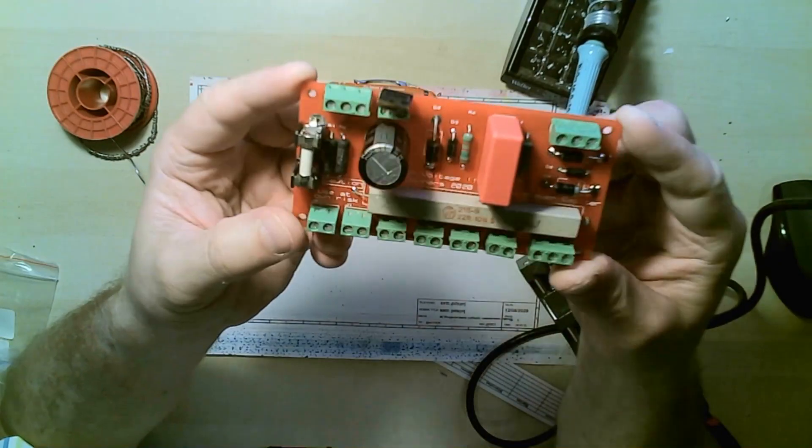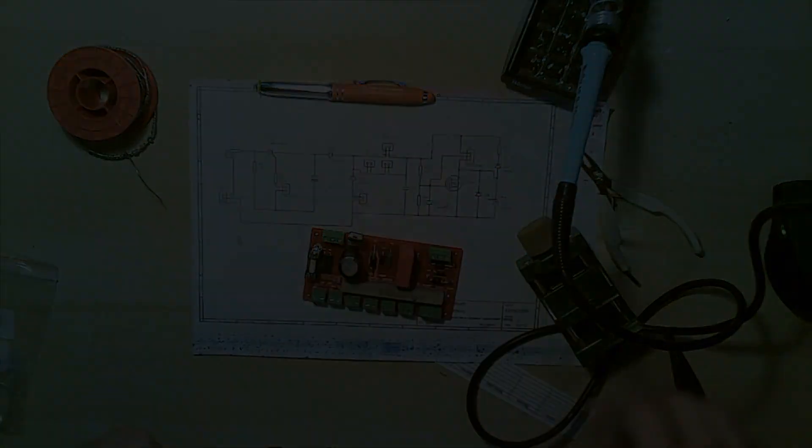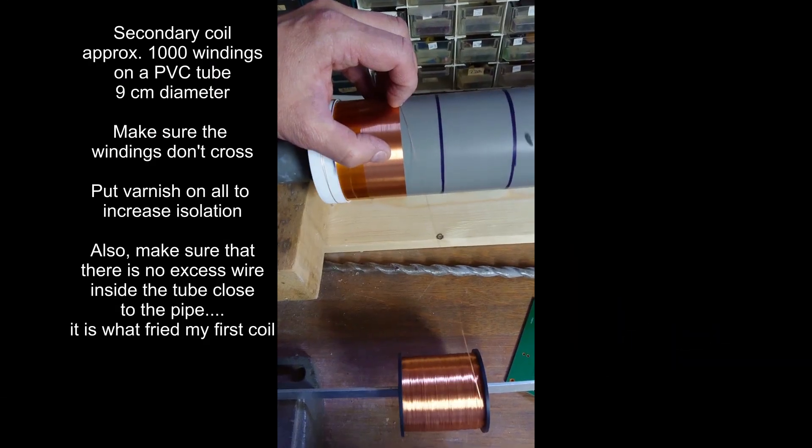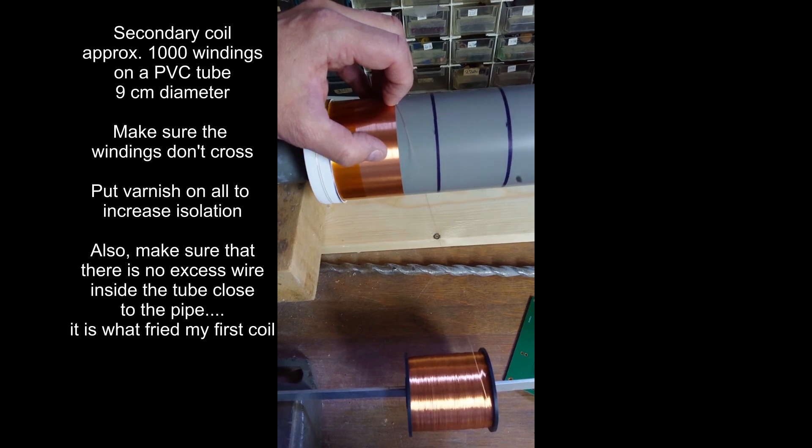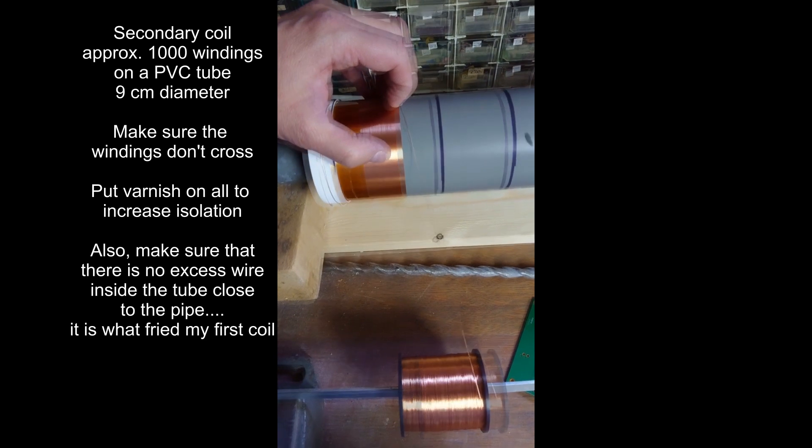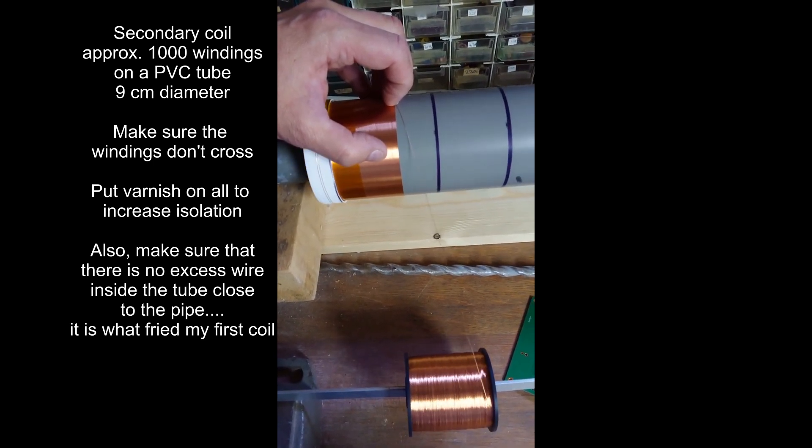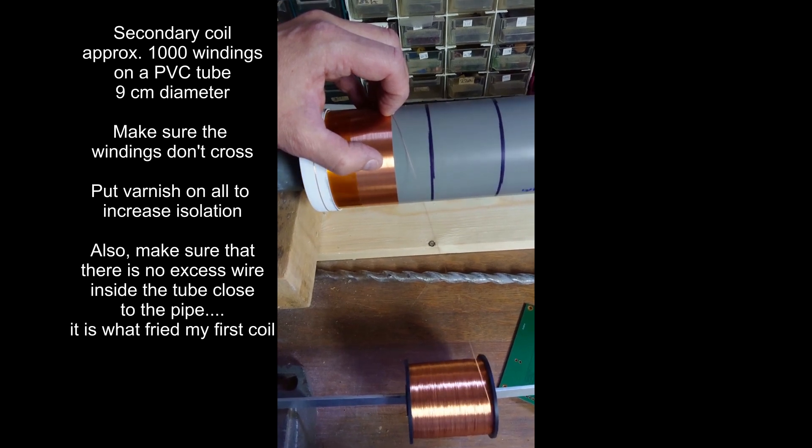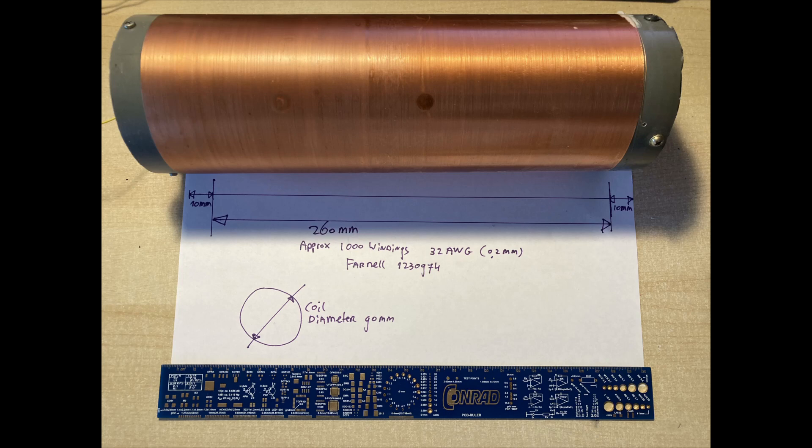Okay, the circuit board is done, let's start winding the secondary coil. And this is the result, a secondary coil of approximately 1000 windings. Now let's move on to the primary coil.